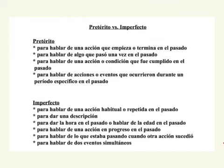Usually, that something else happening is in the preterite. Y también se usa el imperfecto para hablar de dos eventos simultáneos — two simultaneous events.